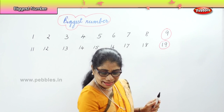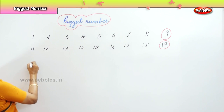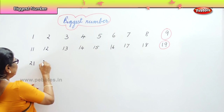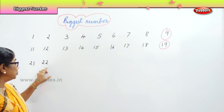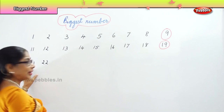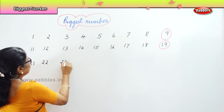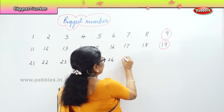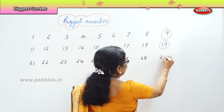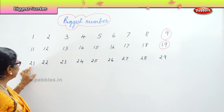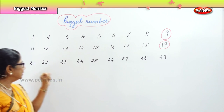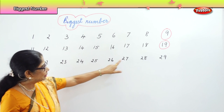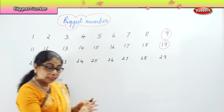Now let's look at the twenties: two and one is twenty-one. The first number is going to be the same for all — two. Then twenty-one, twenty-two, twenty-three, twenty-four, twenty-five, twenty-six, twenty-seven, twenty-eight, twenty-nine. The first numbers are all in the twenties. Looking at the second numbers, which is the biggest? Definitely twenty-nine.